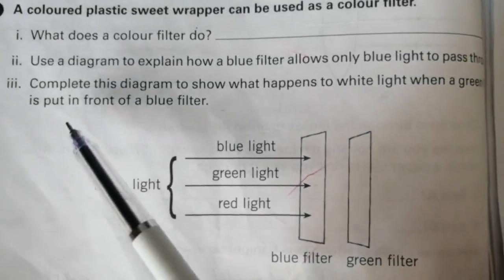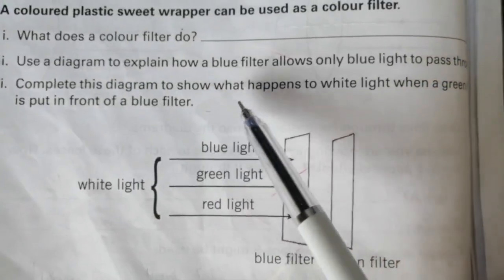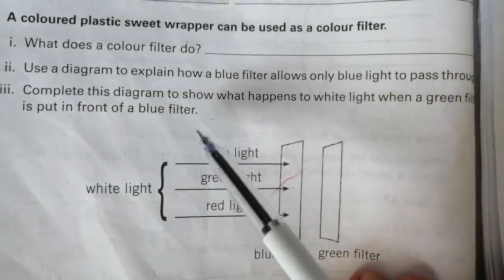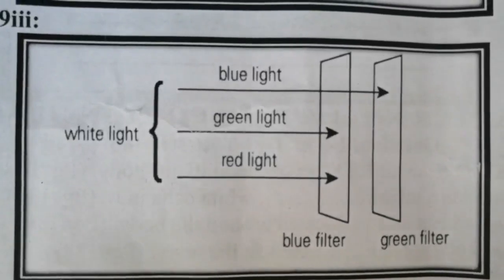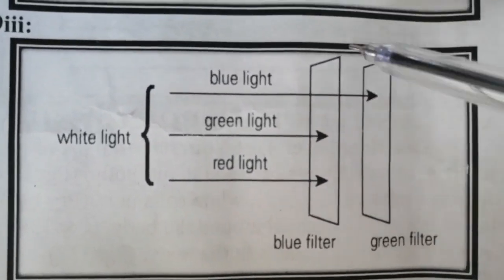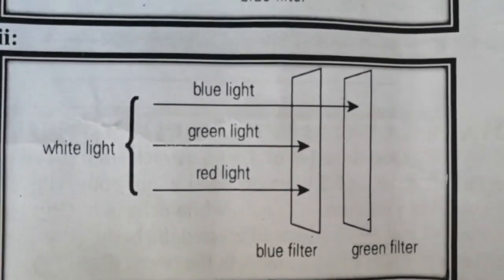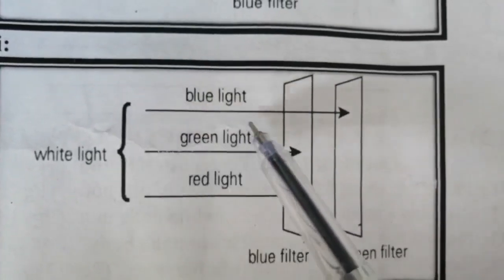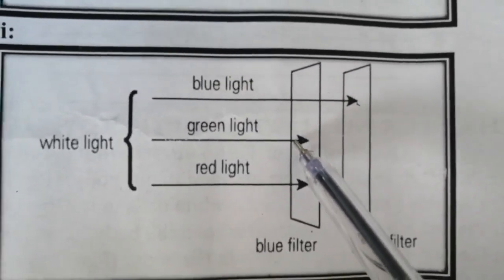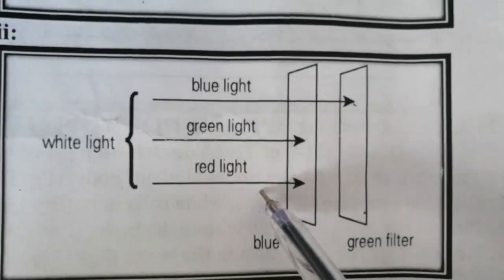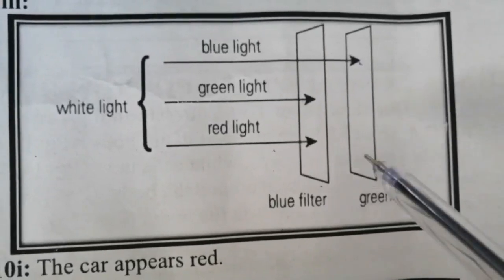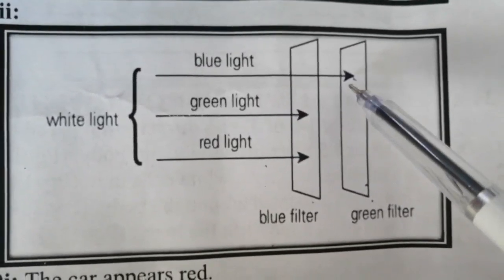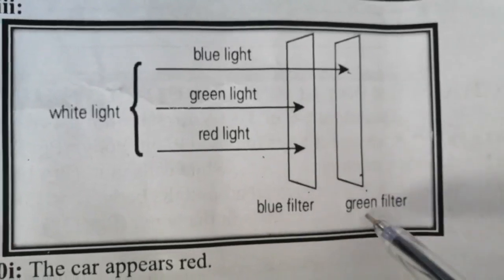Question number 9, part 3: complete this diagram to show what happens to white light when a green filter is put in front of a blue filter. This is the blue filter and this is the green filter. When white light falls on the blue filter, it allows only blue light to pass through and absorbs green and red light. As there is only blue light remaining, the green filter will absorb this blue light and no light will be transmitted through the green filter.